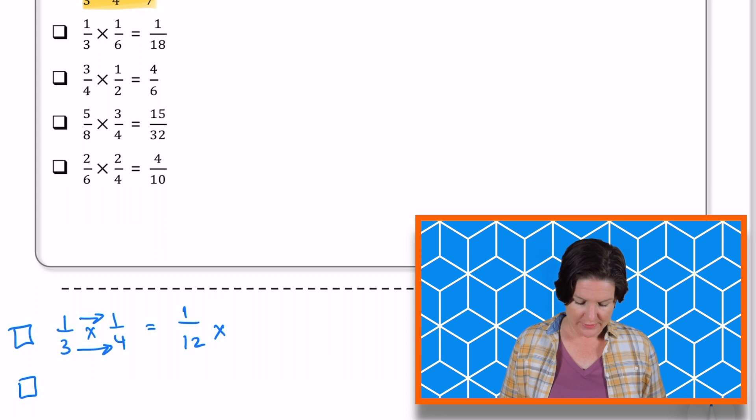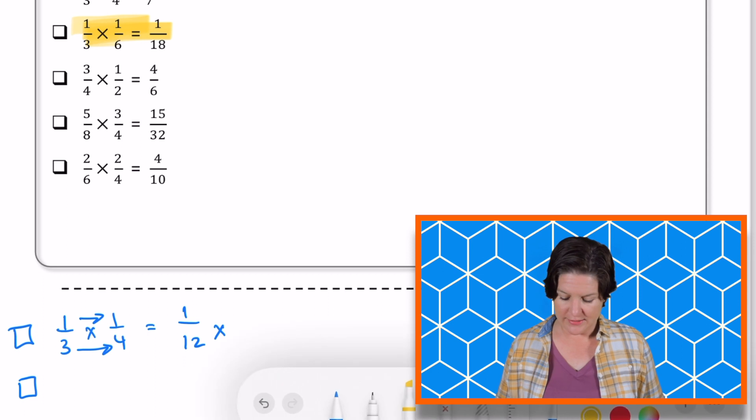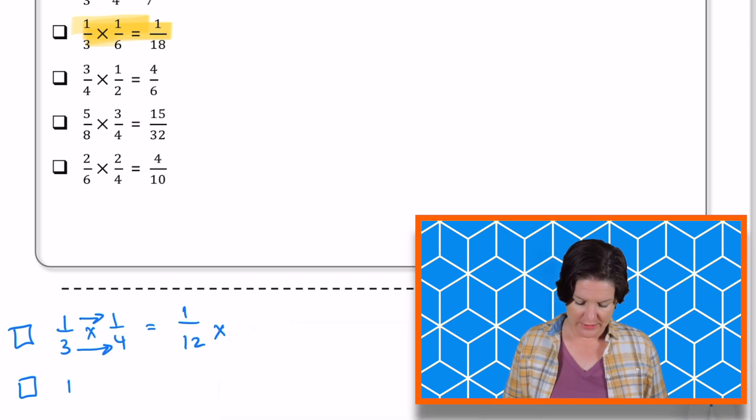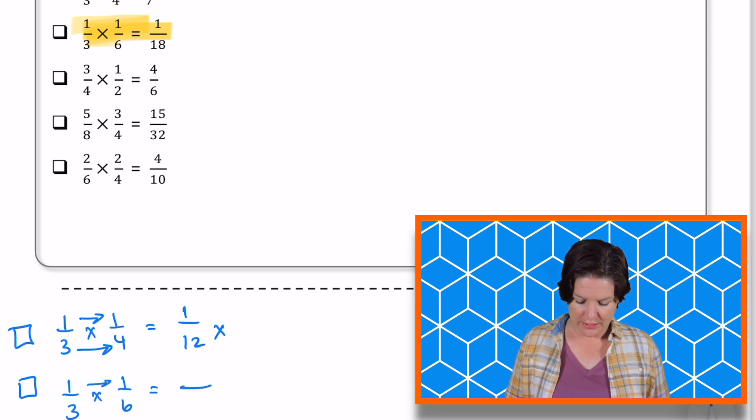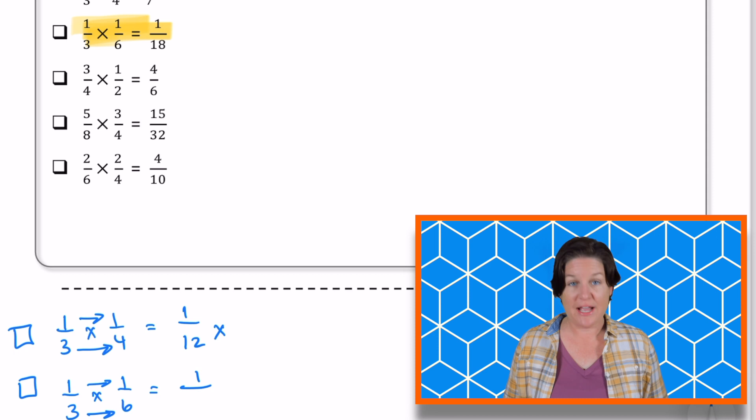Next up, we've got one third times one sixth, is that one eighteenth? Let me bring it on down to try it. So multiplying the numerator, I would get one. Multiply the numbers in the denominator, that would be 18.